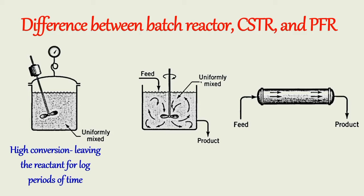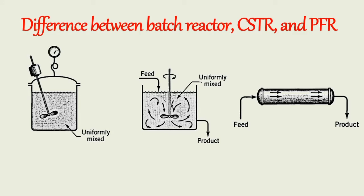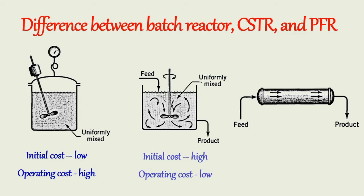Further disadvantages of the batch reactor include variability of products from batch to batch and the difficulty of large-scale production. In CSTR, conversion of reactant per unit volume of the reactor is small; hence to obtain high conversion, very large reactors are required. In a plug flow reactor, the highest conversion per unit volume of the reactor can be obtained. In a batch reactor, the initial cost is quite low but the operating cost is high. In CSTR and PFR, the initial cost is quite high but the operating cost is low.